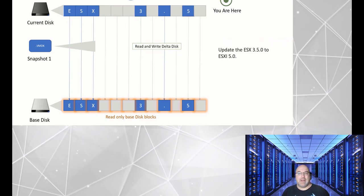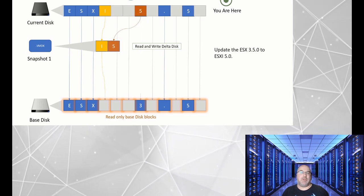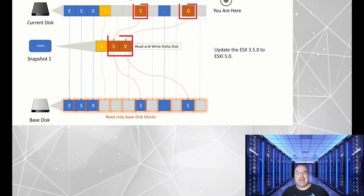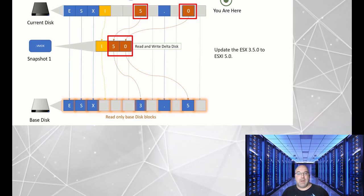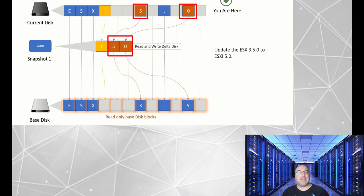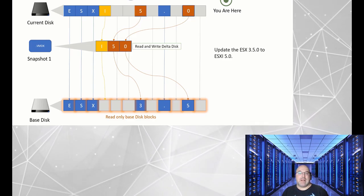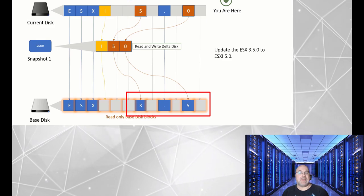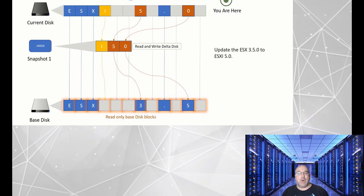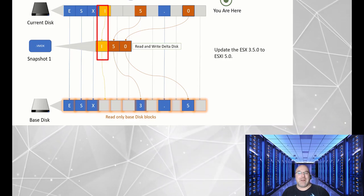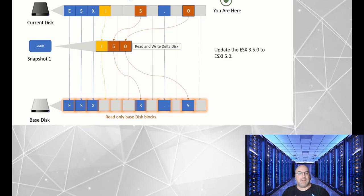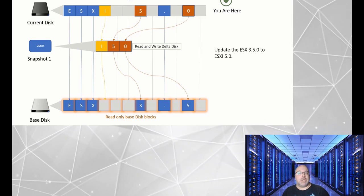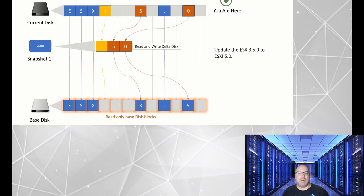Now, let's say you decide to upgrade the ESXi version. The changes made during this upgrade are saved in snapshot1.vmdk. The changes are represented as brown blocks, which are essentially read-and-write data blocks for the current state disk. These brown blocks are also linked to the corresponding read-only blue data blocks on the base disk. Additionally, the yellow data blocks represent new read-and-write data in snapshot1.vmdk for the current state disk, and they are linked to the read-only gray or empty data blocks on the base disk.